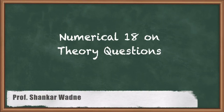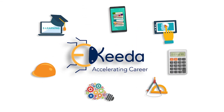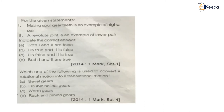Hello dear students. In this topic we are going to see two theory questions on gear. The first question was asked in GATE 2014 for one mark, from the Theory of Machines subject. The question gives two statements: first, mating spur gear teeth is an example of higher pair; second, a revolute joint is an example of lower pair. We need to indicate which statements are correct.